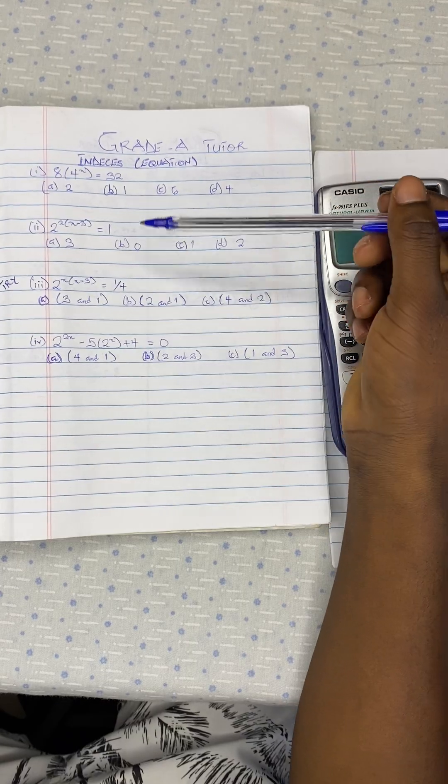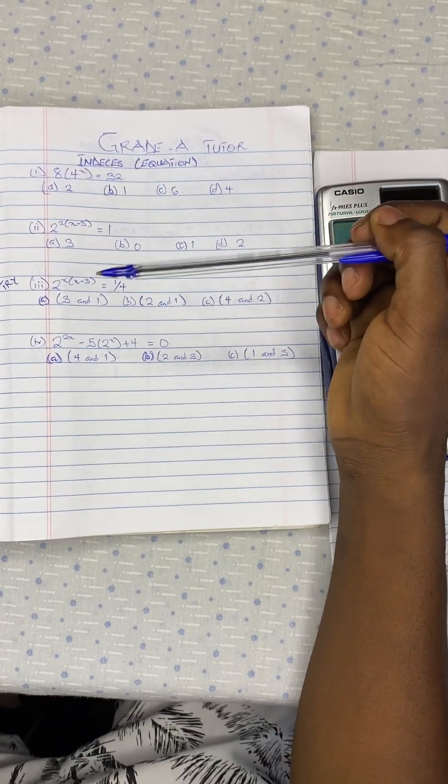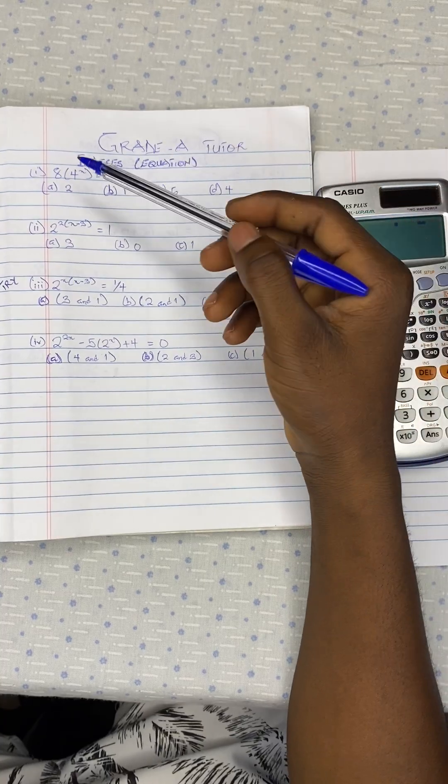And we have the last question to be 2 exponent 2x minus 5 bracket open 2 exponent x plus 4 equal to 0. So for each question, we have options. So this is what we are going to do.